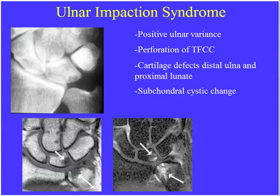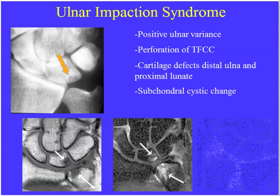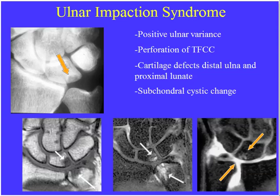Ulnar impaction syndrome is associated with positive ulnar variance. It results in perforation of the triangular fibrocartilage, impaction of the distal ulna against the lunate, causing ulnar-sided pain. Eventually the articular cartilage tears, leading to arthrosis and osteoarthritis with subchondral cyst formation and marrow edema. A perforation of the triangular fibrocartilage extends from the distal radius to the distal ulna. In this case: mild positive ulnar variance, marrow edema within the adjacent lunate representing impaction, and a full thickness tear of the central triangular fibrocartilage.